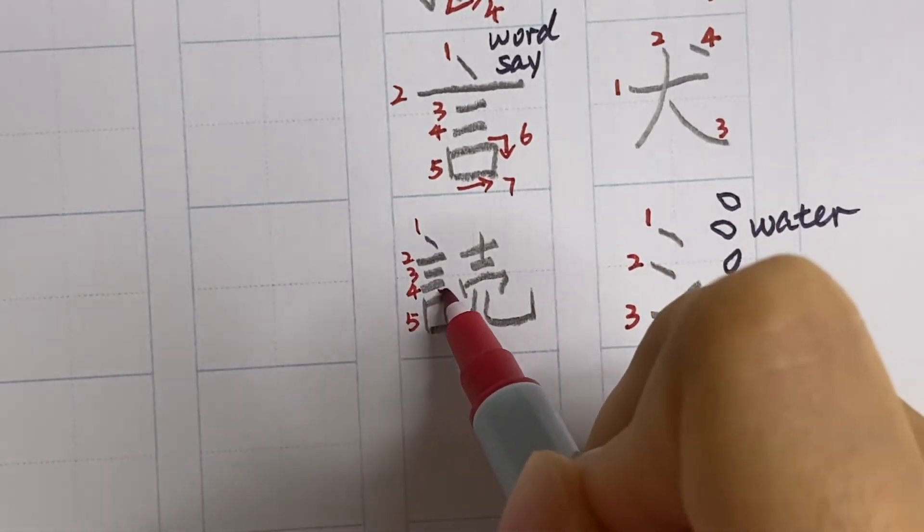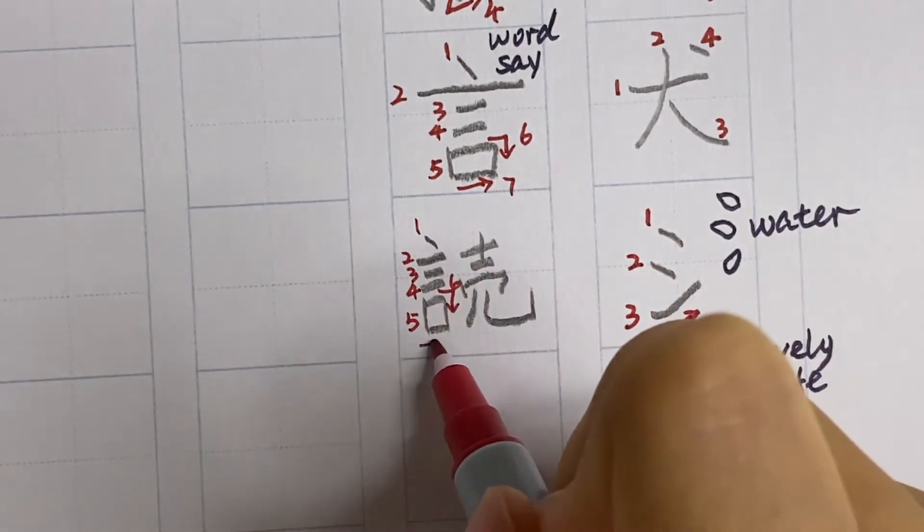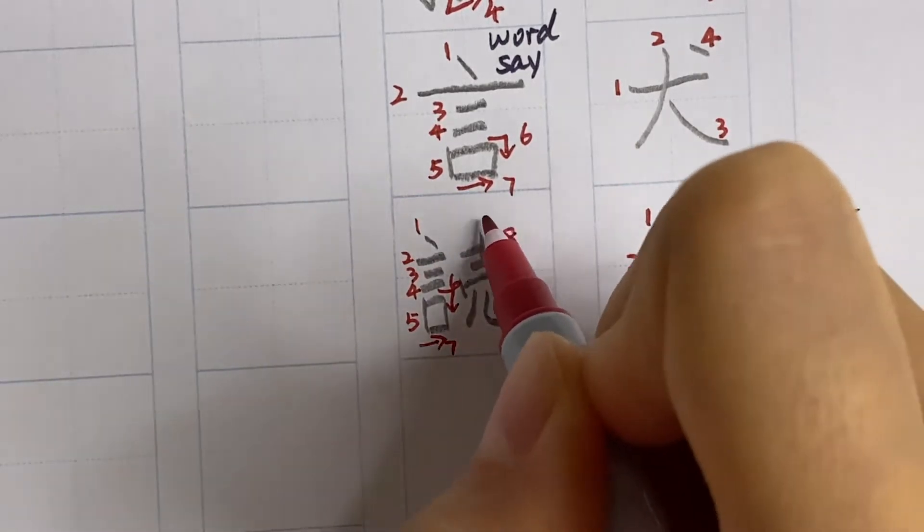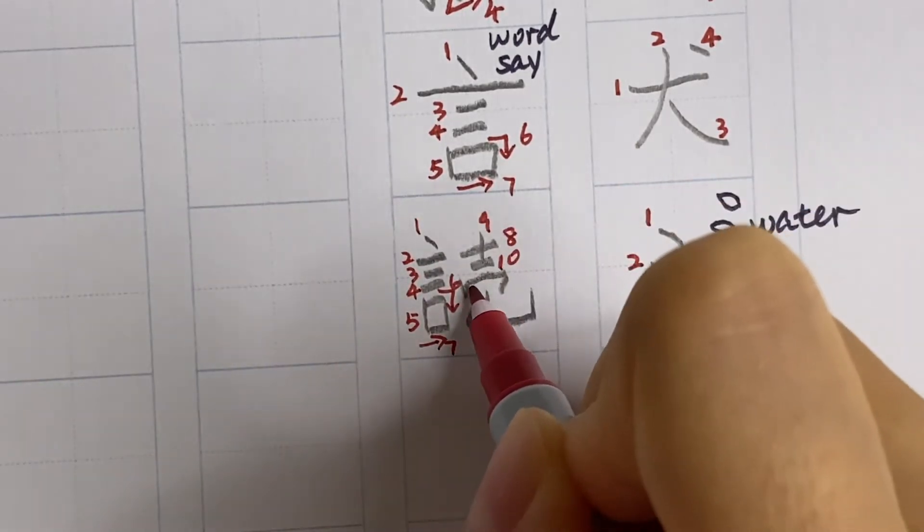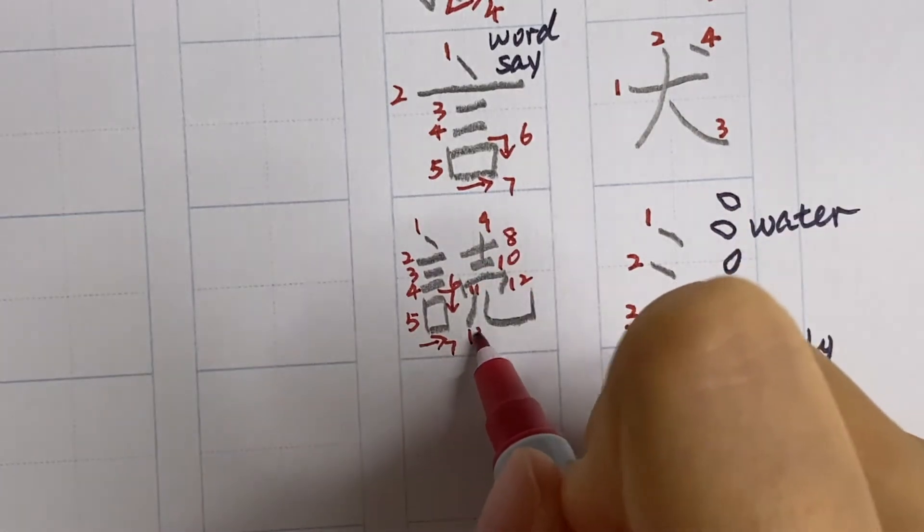It's always top to bottom, left to right. This kanji should be familiar even to beginners: yomu, or for onyomi we have dokku or toku like dokushou. So the meaning is to read.